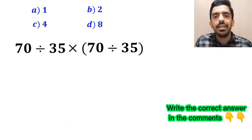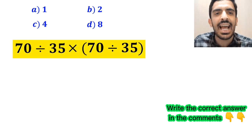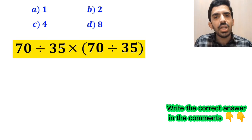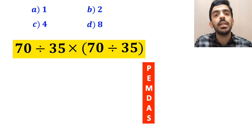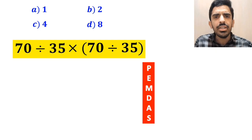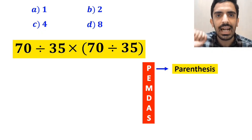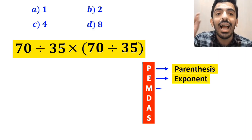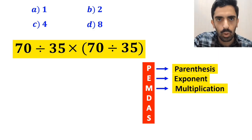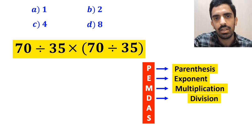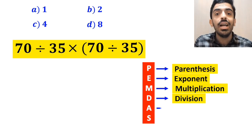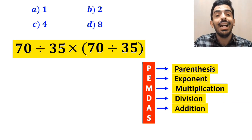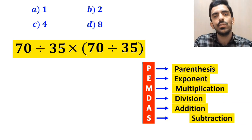Now let's go through this question step by step and solve it together. To solve this expression we need to follow the PEMDAS rule step by step. According to this rule: P stands for parentheses, E stands for exponents, M stands for multiplication, D stands for division, A stands for addition, and S stands for subtraction.